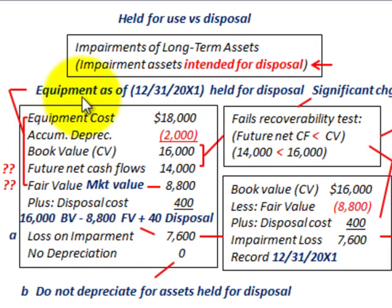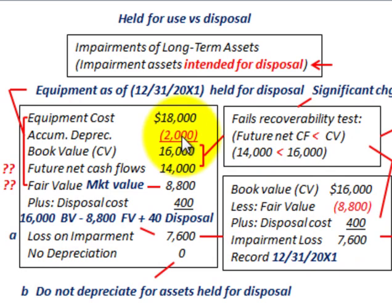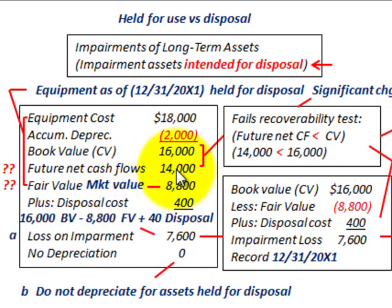For our example, we have equipment on 12/31/20x1 which is held for disposal. We have an equipment cost of $18,000 and accumulated depreciation of $2,000, so our book value or carrying value is $16,000. The future net cash flows of this asset are given as $14,000, and the fair value or market value was determined to be $8,800.